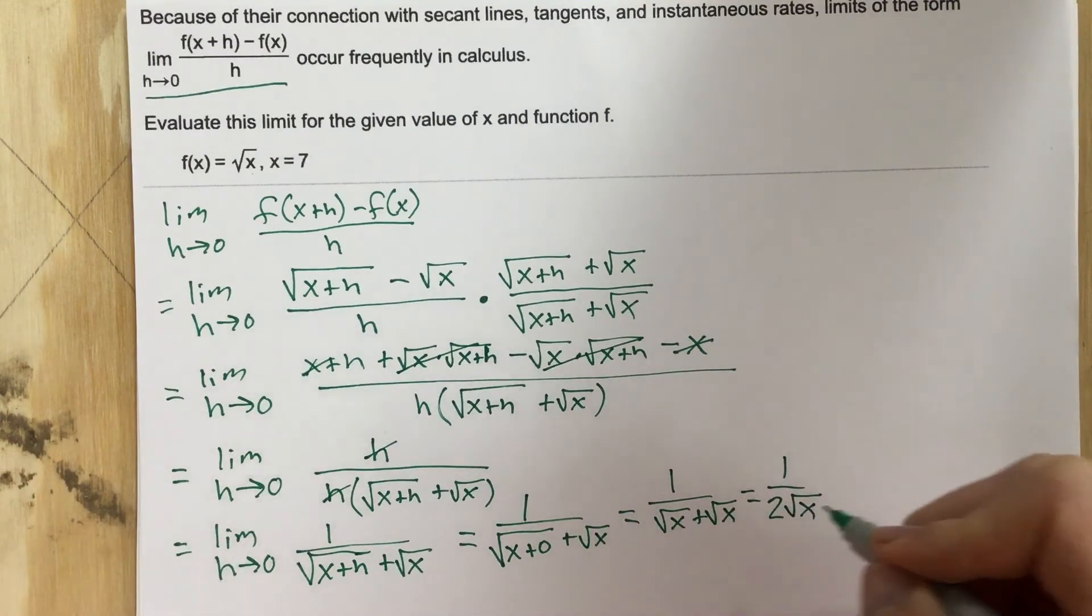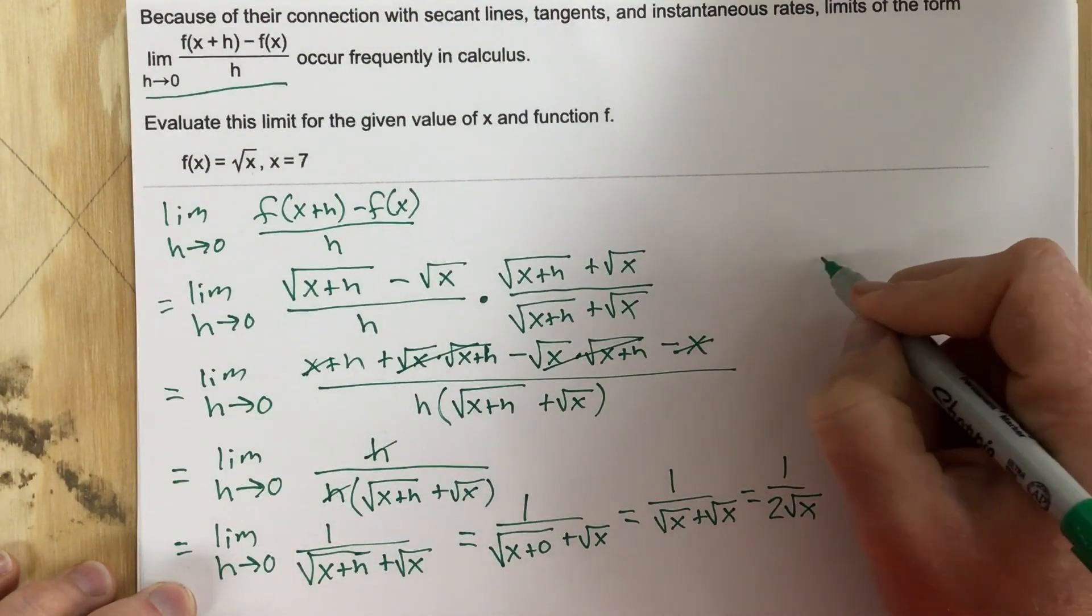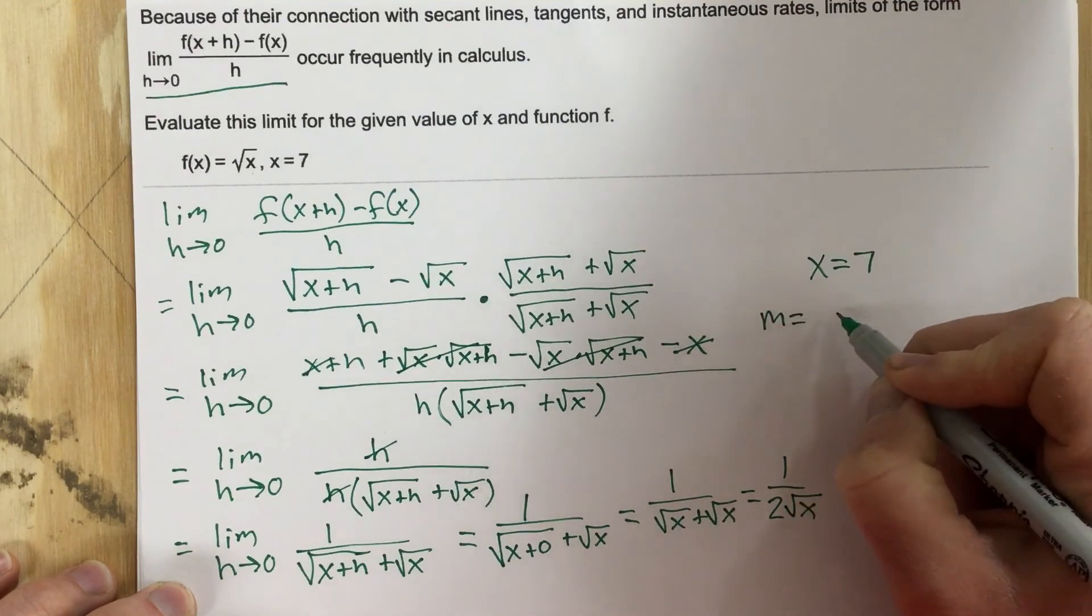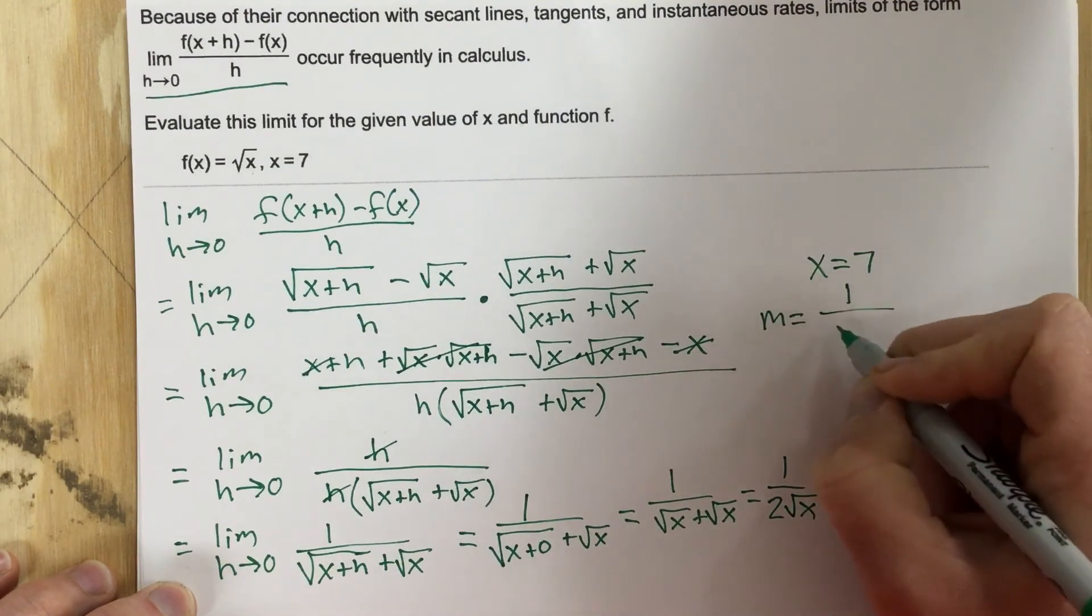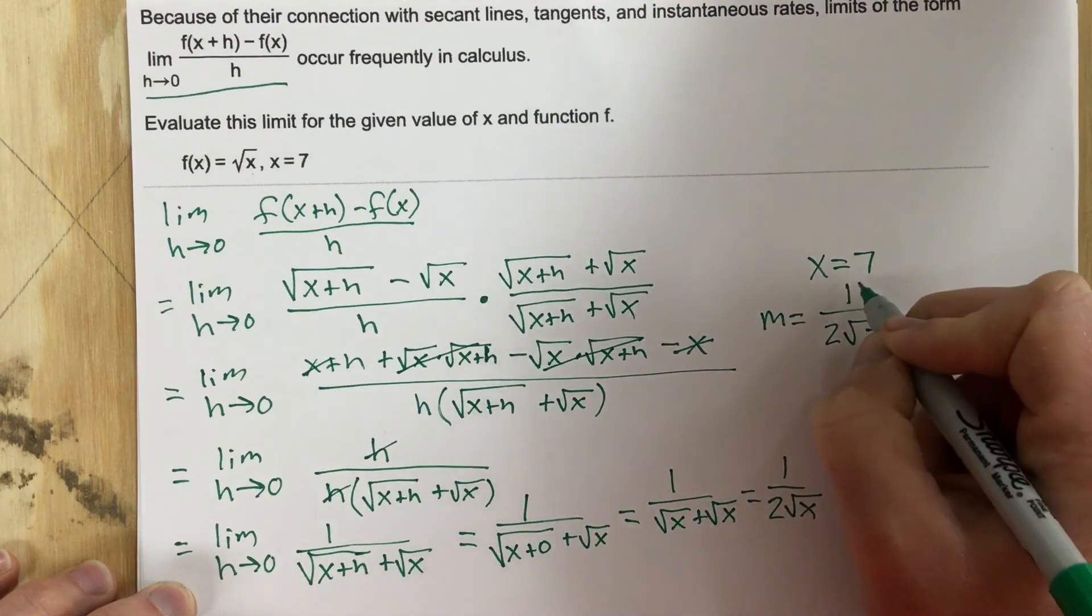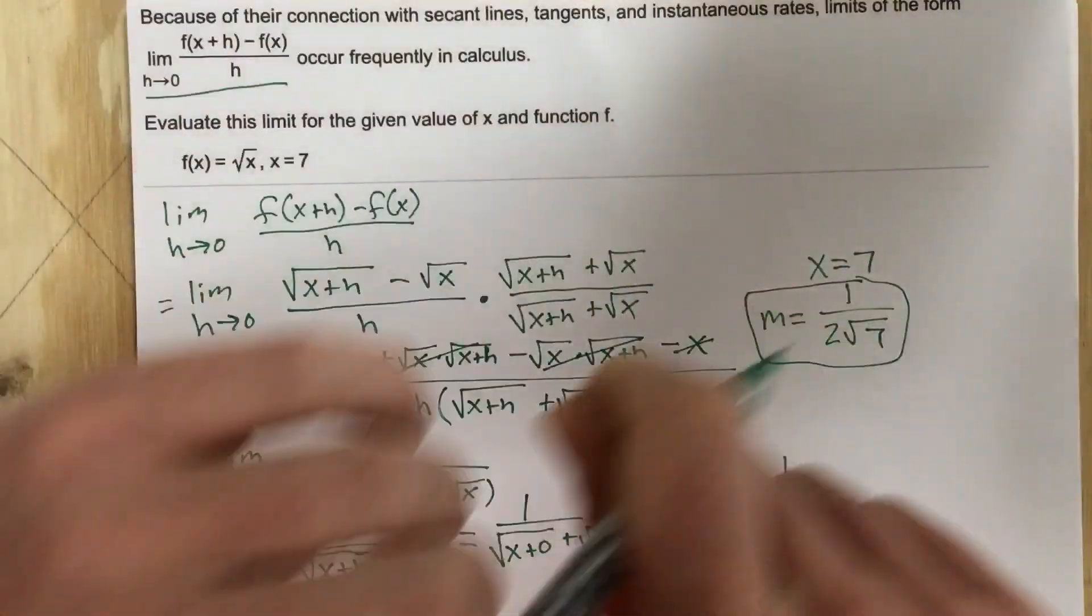So now they want us to plug in x equals 7 into this function. So when I plug in x equals 7 into the function, I'm going to end up with... So x equals 7. I end up with m, our slope, being equal to 1 over 2 root 7. So the slope is 1 over 2 root 7.